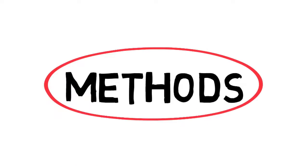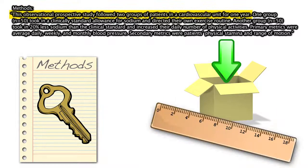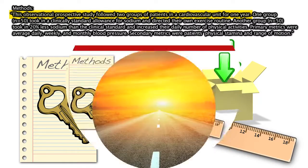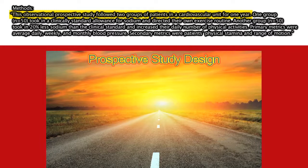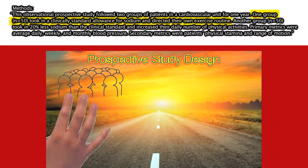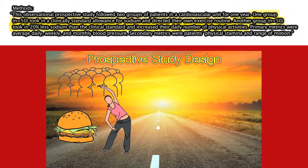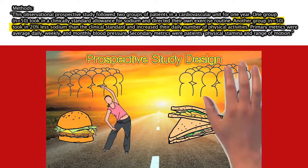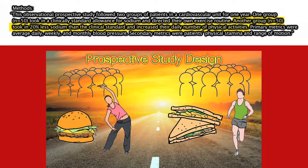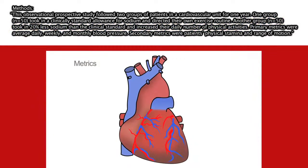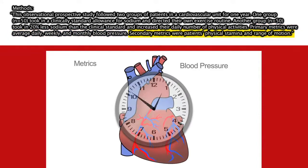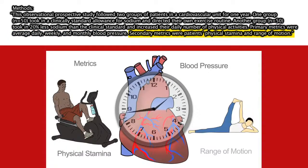We then outline our methods. This section should report the key elements of your approach, such as how you collected your data and what your main outcome measures were. Using a prospective design, we followed one set of patients who took in a clinically standard amount of sodium and who set their own exercise habits, and a different set of patients who took in 20% less sodium and had a more challenging exercise regimen. Our main metrics were blood pressure readings at different time points, while other metrics included physical stamina and range of motion.